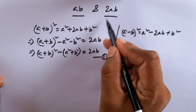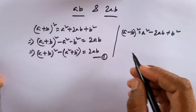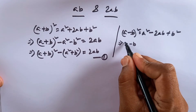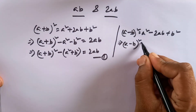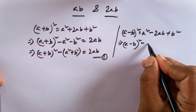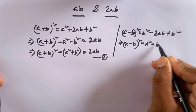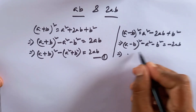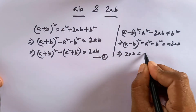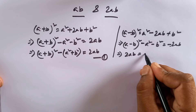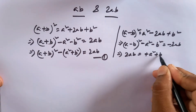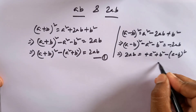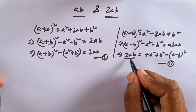This is the first formula of 2AB. And for the second formula: A minus B whole square gives A squared minus 2AB plus B squared, so rearranging, 2AB equals A squared plus B squared minus A minus B whole square.